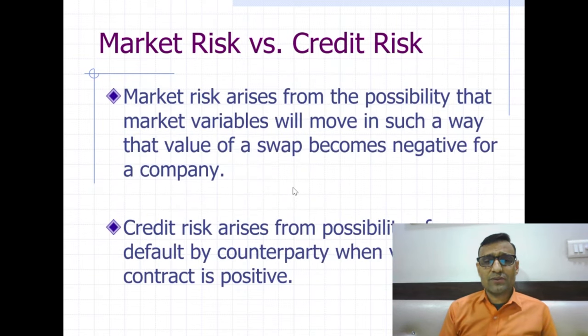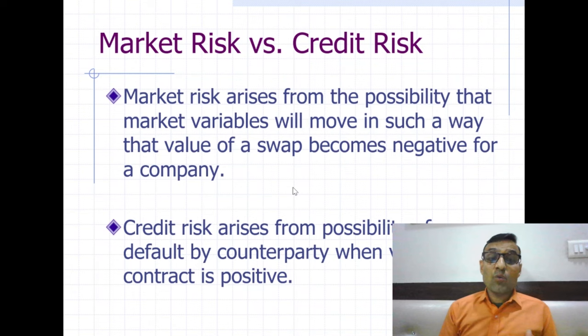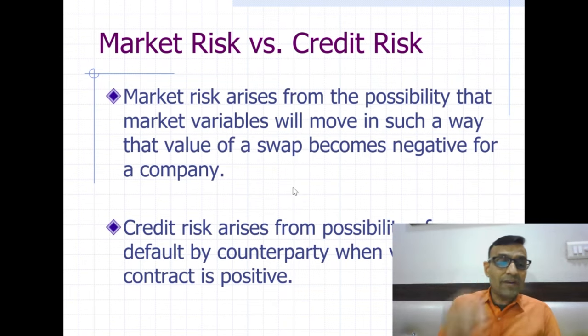Market risk arises from the possibility that market variables move in such a way that the value of the swap becomes negative for the company. Credit risk arises from the possibility of a default by the counterparty when the value of the contract is positive. Thank you very much. I hope you have gained some understanding of swap contracts. Thank you to HRDC Gujarat University for this opportunity to deliver my session on Currency and Interest Rate Swaps.